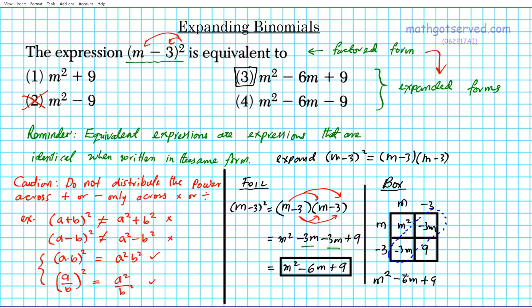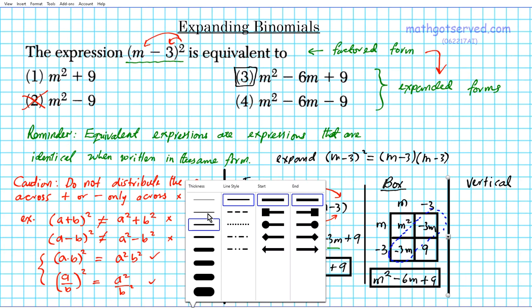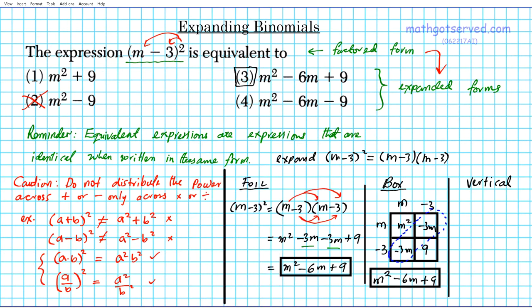You can see that our answers are exactly the same. The power of the box method is that it helps keep your factors nicely organized. And then the last method is very similar to foil. It's known as the vertical method. The vertical method is very similar to the box method in the sense that it helps keep your factors organized.